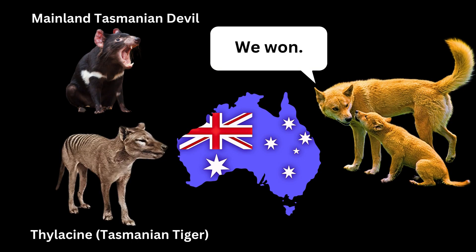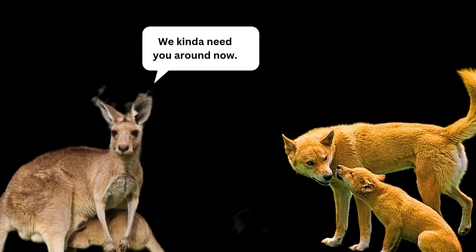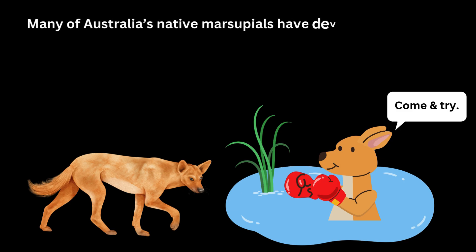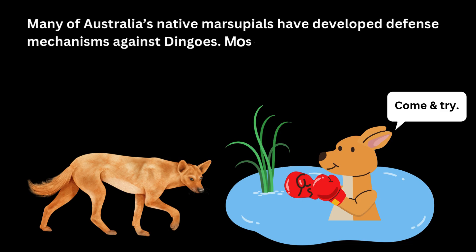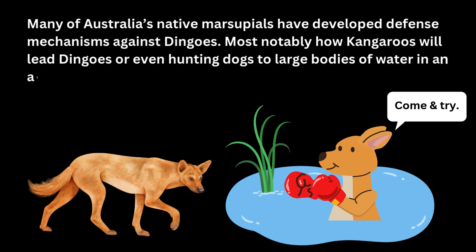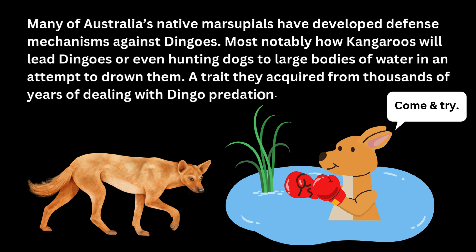The introduction of dingoes dramatically altered Australia's ecosystem. They outcompeted the pre-existing apex predators upon their arrival to Australia, most notably the thylacine or Tasmanian tiger and Tasmanian devil on the mainland, and usurped the role as Australia's top predators. As its top predator for the last few thousand years, the ecosystem of Australia has come to adapt to having dingoes as a keystone species. Many of Australia's native marsupials have developed defense mechanisms against dingoes, most notably how kangaroos will lead dingoes or even hunting dogs to large bodies of water in an attempt to drown them — a trait they acquired from thousands of years of dealing with dingo predation.